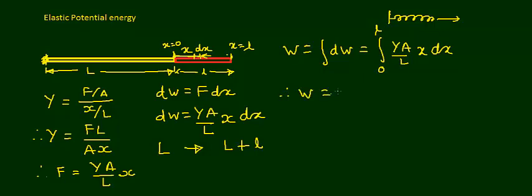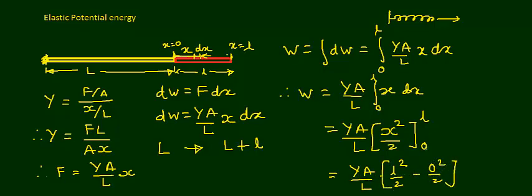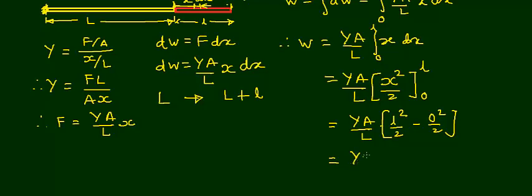Since YA/L is constant, W = (YA/L) · ∫x dx from 0 to l. The integral of x dx is x²/2. Substituting the limits, we get W = (YA/L) · (l²/2 − 0) = YAl²/(2L).